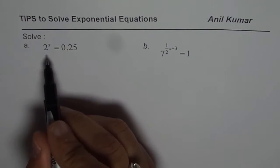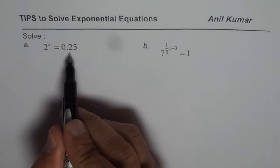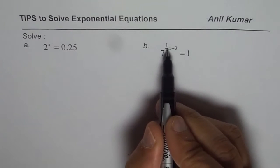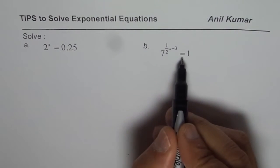The first one here is 2^x = 0.25, and then we have 7^(x/2 - 3) = 1.